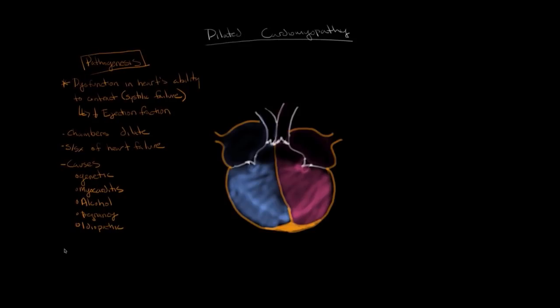It's also important to note what does NOT cause dilated cardiomyopathy. Specifically, it is not caused by ischemic heart disease, valvular heart disease, or hypertension. This is important because these conditions can cause heart failure with a similar presentation — the heart dilates and results in systolic failure — but the difference is that in those conditions, heart failure is secondary to the other condition, whereas in dilated cardiomyopathy, it is a primary disease of the heart muscle itself.